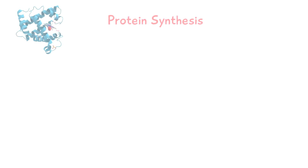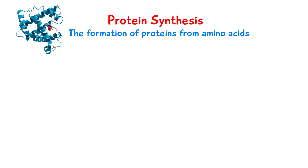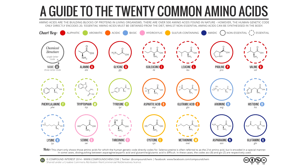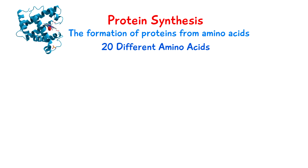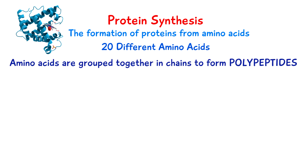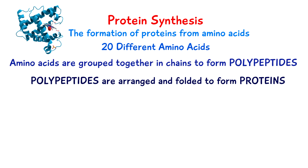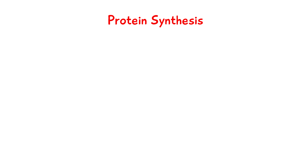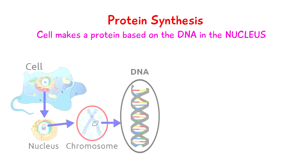Welcome to Five Minute School. In this video we're going to be talking about protein synthesis, transcription, and translation. Protein synthesis is a process where proteins are made from amino acids. There are 20 types of amino acids. Amino acids group together in chains to form polypeptides, and these polypeptides are then arranged and folded to form a protein. Protein synthesis is where a cell makes a protein based on the message contained inside DNA.